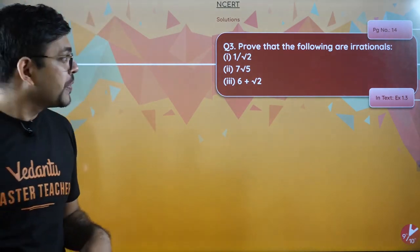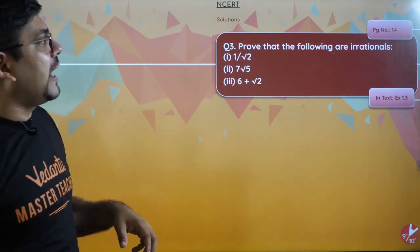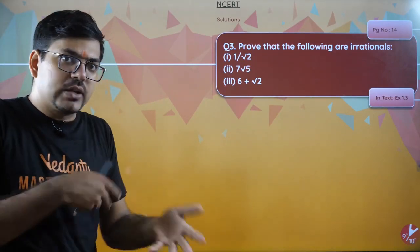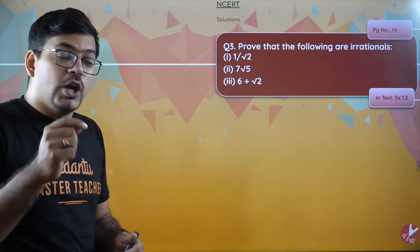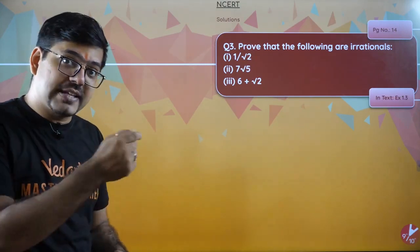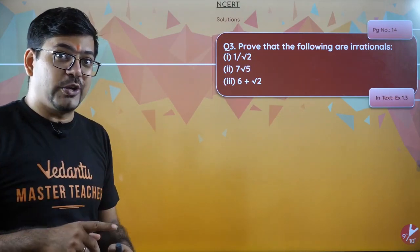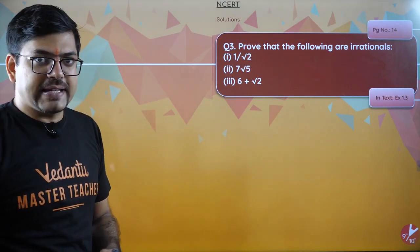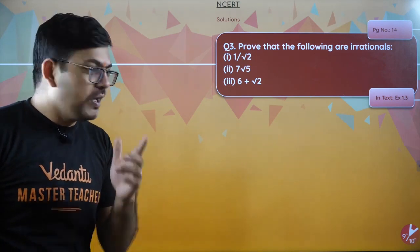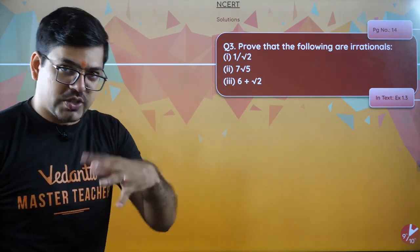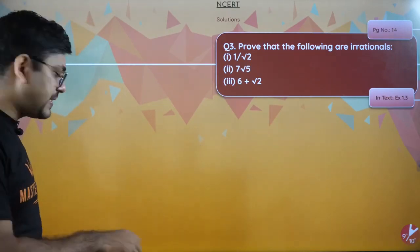The question says prove that the following are irrational. Just before this video, you would have seen question number 1 and 2 of this exercise, Exercise 1.3 only. In that exercise, I have taught you how to prove any number irrational.